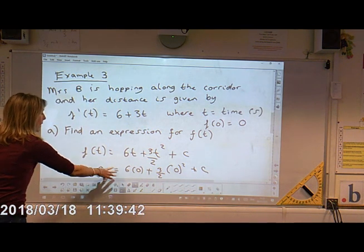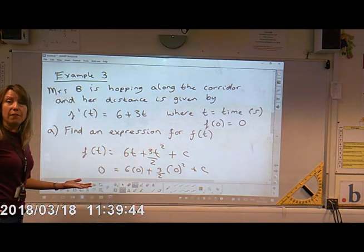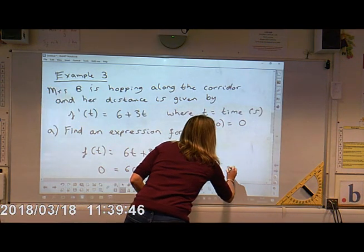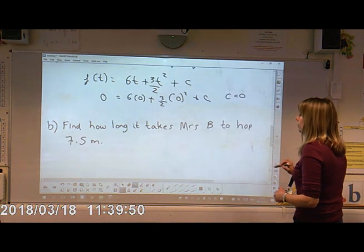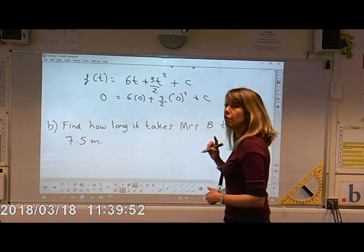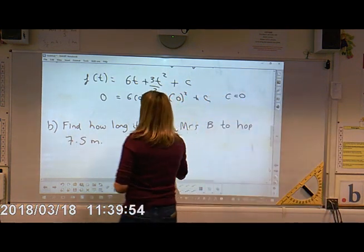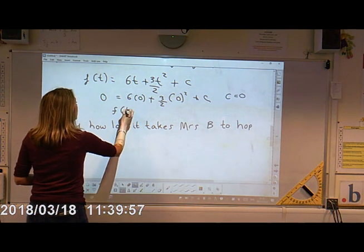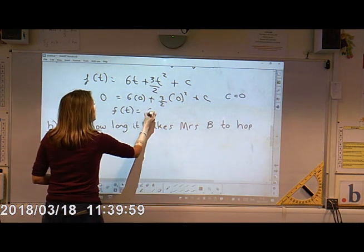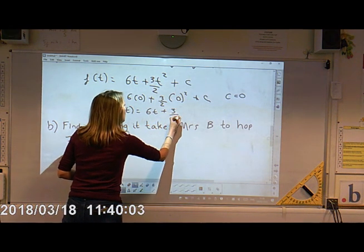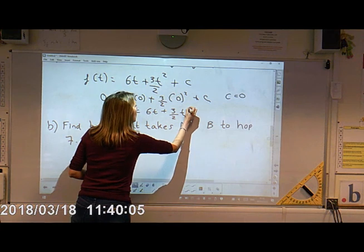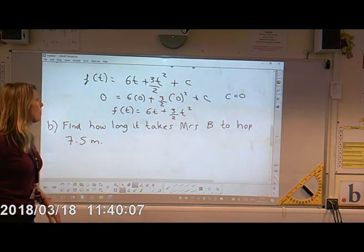When you work that all out, zero equals zero plus zero. So therefore, C equals zero. So if we rewrite our function now, it will just be the function of T equals six T plus three halves of T squared. We don't need to write our zero in.